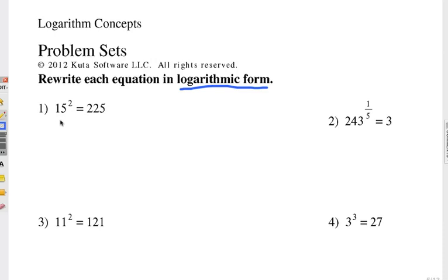Let's do the first one together. This is 15 squared equals 225, and we know that's true. So the question, first of all, is what's the base, because the base number goes right next to log. Well, the base is 15. So we're going to have log base 15, and then what is the answer? What's the value? 225. In other words, 15 to the what power is 225? And the exponent, the answer in this case, is 2. 15 to the second power is 225.